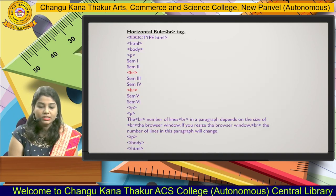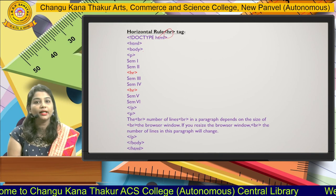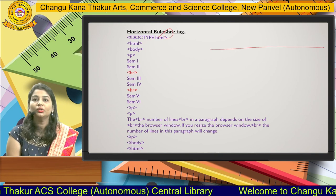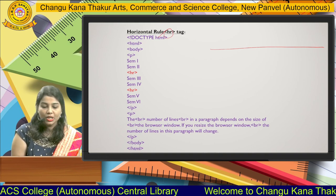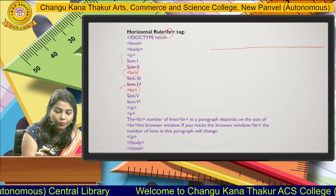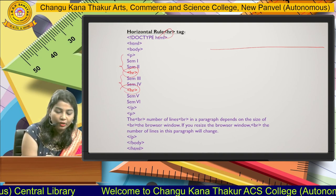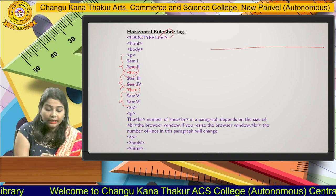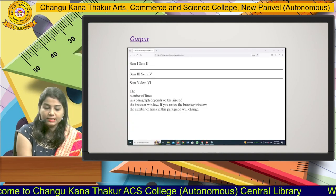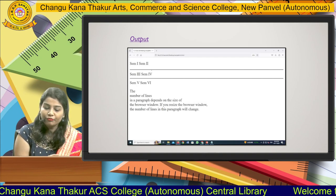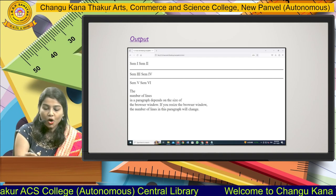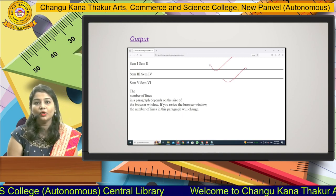Our third tag is the HR tag, which means horizontal rule. A horizontal rule creates a horizontal line on the web page. I have used this HR tag between the items — after item 1, item 2, item 3, item 4, item 5, and item 6. The output displays those items with horizontal lines between them because we applied the horizontal tag.